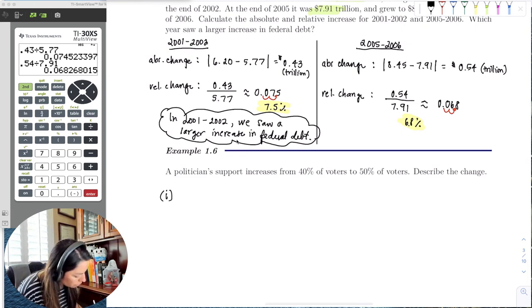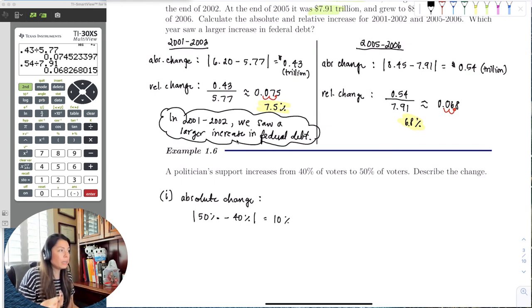So the first thing I want to do is find the absolute change. OK, and that's just the ending value, so 50% minus the 40%, which is 10%. So the absolute change is 10%, right? And then we could say the relative change, so there was a 10% difference of voters, right? They got an increased 10% of voters, right? But then let's describe the relative change now.